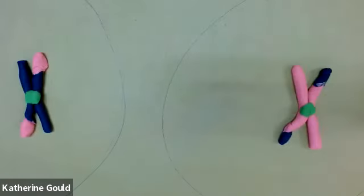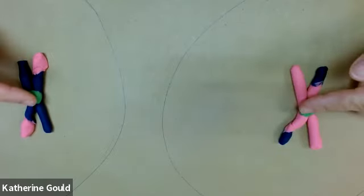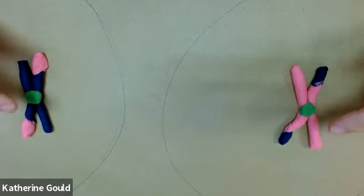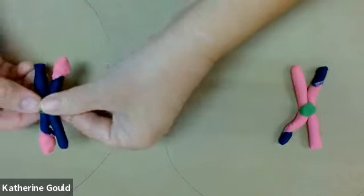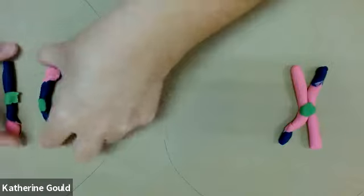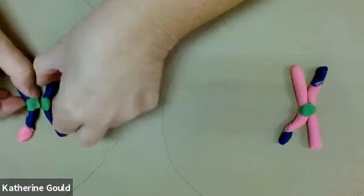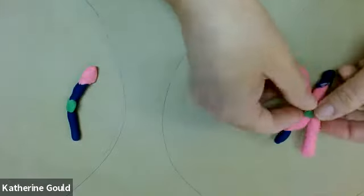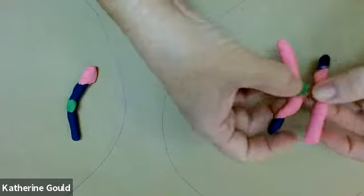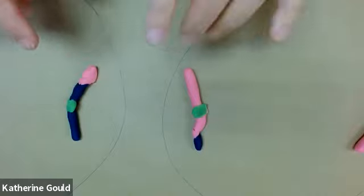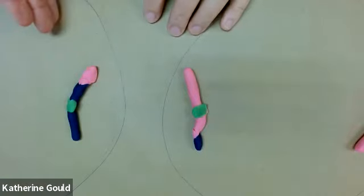In prometaphase, the spindle fibers attach to the kinetochores. And then during metaphase 2, the centromeres that are holding the sister chromatids together break down. And the sister chromatids are going to separate to the opposite poles of the cells.